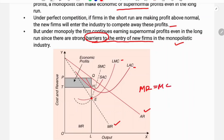At the equilibrium point, OP is the price and OT is the average cost. The difference PT is the profit. So the shaded region represents the profit area. The long-run profit is the price above average cost.